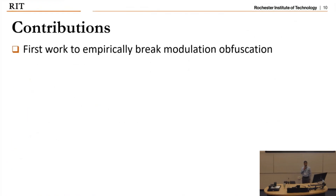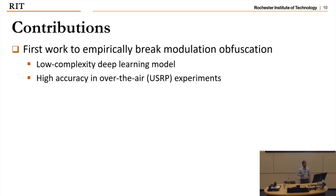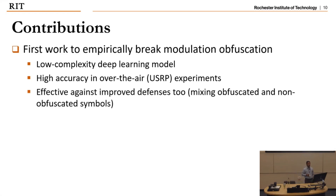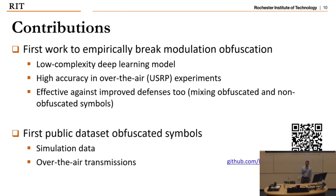Our contribution: we are the first to empirically break modulation obfuscation using a low-complexity deep learning algorithm — specifically a CNN — which achieves high accuracy in over-the-air USRP experiments. Our technique is also effective when the transmitter switches on and off between using and not using modulation obfuscation to confuse the receiver. We also publicly released our code for modulation obfuscated symbols, since no publicly available code existed for the community to study modulation obfuscation schemes — you can scan the QR code to access it.